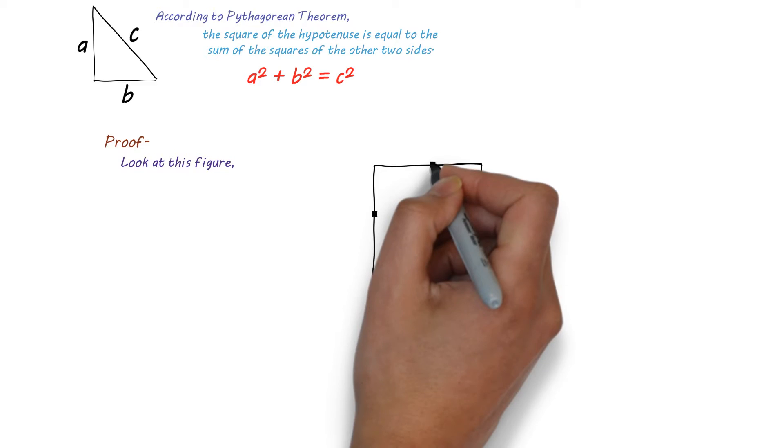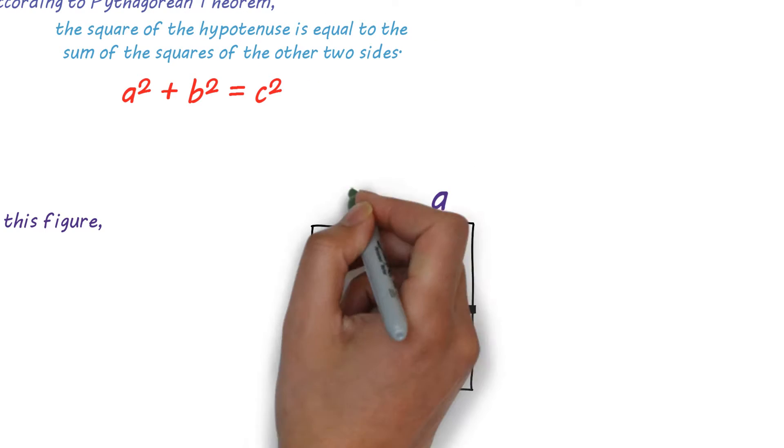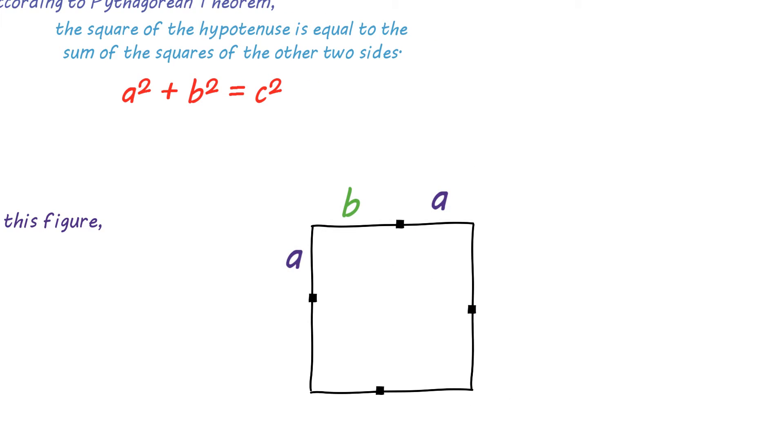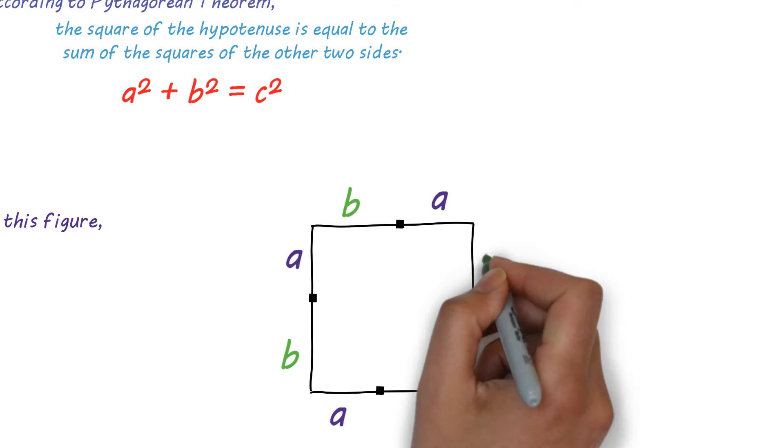There is a square. Obviously, all sides are equal. Now divide each sides of that square such that one part is of length A and another part is of length B. Now join these four points.